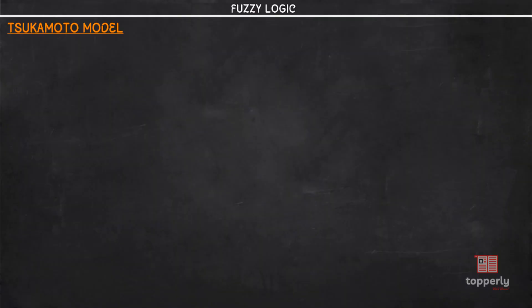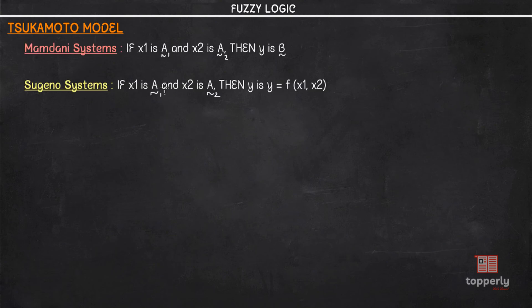From our previous lectures, we have studied about the other two graphical techniques of inferences, which were the Mamdani model and the Sugino model. In the case of Mamdani systems, our two antecedents were fuzzy sets or fuzzy numbers and our consequent was also a fuzzy set. However, in the case of the Sugino systems, even though our two antecedents are fuzzy sets, our consequent was a function of the inputs as specified by the antecedent in the rules.